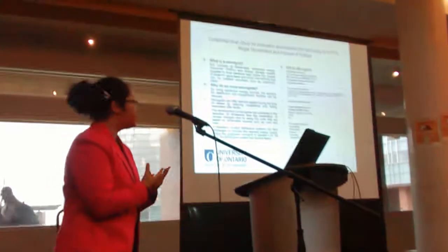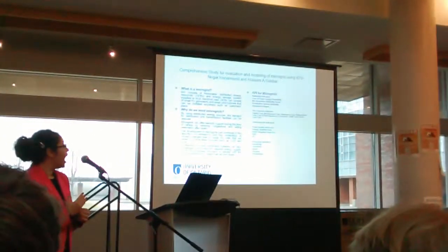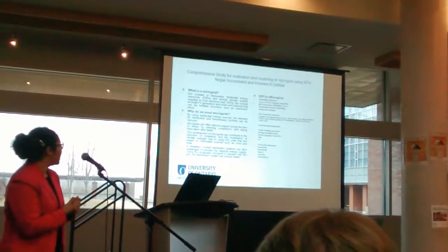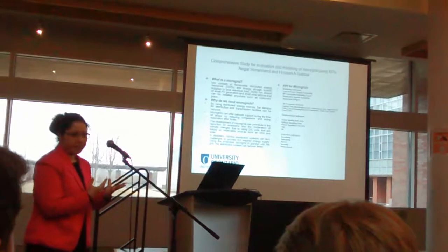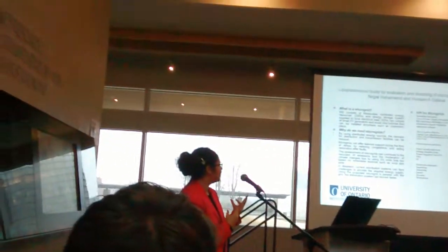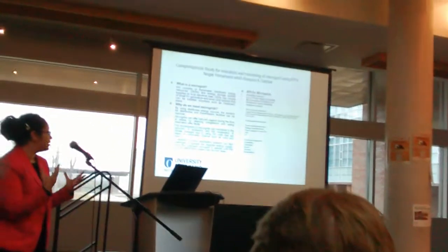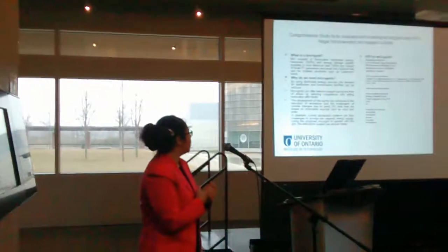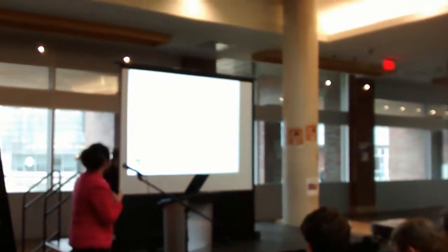A microgrid consists of distributed energy resources, called DERs, and an energy storage system such as a battery bank. These DERs can be small PV generators or small wind turbines that can be installed anywhere, such as a customer's location. We can harvest energy from these generators, store it in a battery bank, and use it during a disaster. This benefits not only the customer but also the network.